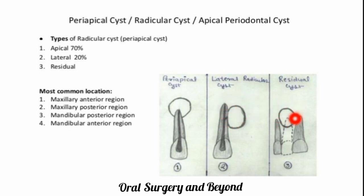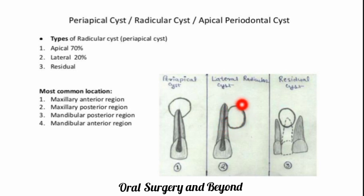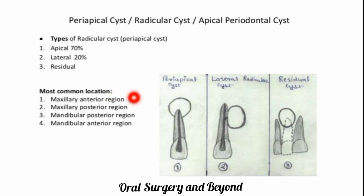The apical cyst forms in the periapical region of the infected tooth. The lateral cyst is present at the lateral side, forming at the lateral canals of the tooth. The residual cyst remains after the infected tooth has been removed. Percentage-wise, the apical radicular cyst is most common at approximately 70% of cases. The most common location is the maxillary anterior region, followed by the maxillary posterior region and mandibular posterior region.